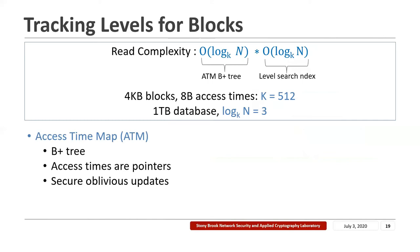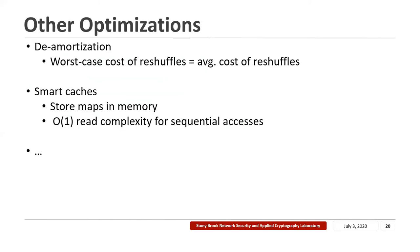With this optimization, the read complexity in SQORAM reduces to O(log_k N) times O(log_k N), where one factor comes from the height of the access time map B+ tree and the other is for the search index for a particular level. In practice, k can be very large — with four kilobyte blocks and eight byte access times, k equals 512, and for a one terabyte database, log_k N equals three. SQORAM also includes de-amortizing the construction so the worst-case cost of reshuffles equals the average cost, avoiding long wait times between accesses. We also introduced smart caching mechanisms to store frequently accessed parts of the maps in memory, resulting in almost constant read complexity for sequential accesses.